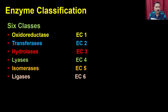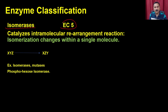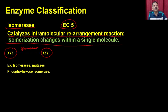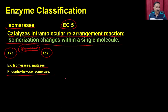We now discuss isomerases, belonging to EC5. Isomerases catalyze intramolecular rearrangement reactions — isomerization changes within a single molecule. If the substrate is XYZ, it is converted to a rearranged form. The group does not change; rather, its position within the molecule changes, generating different isomers. Examples include isomerases and mutases, such as phosphohexose isomerase.